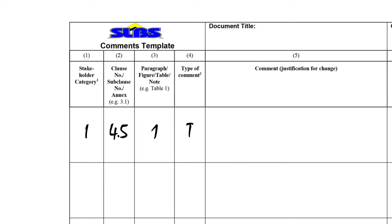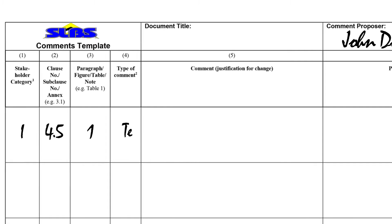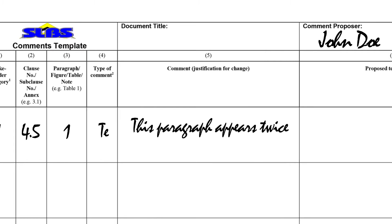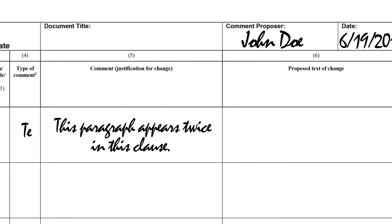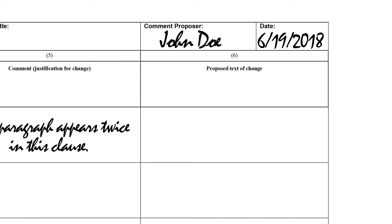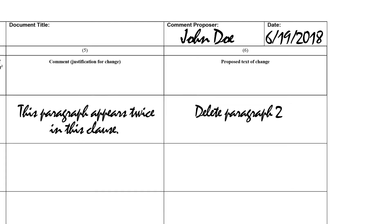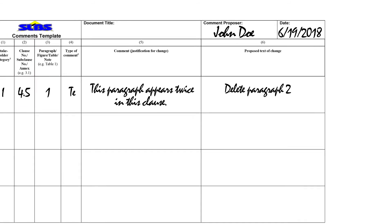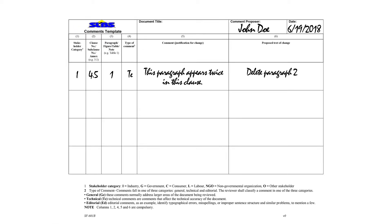So you would denote the type of comment that you are making in here. Then you actually record the comment itself — the justification for change. Why are you making this comment, and why would you like us to change the text of the document? If you have proposed new text or a suggestion for improvement, you record this in column six, which is where the technical committee would take the exact wording when new text is being proposed and insert it in the standard. So it's very important that you are clear and not ambiguous in recording your proposed text for change.